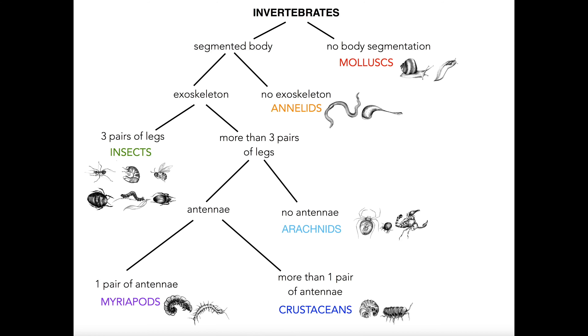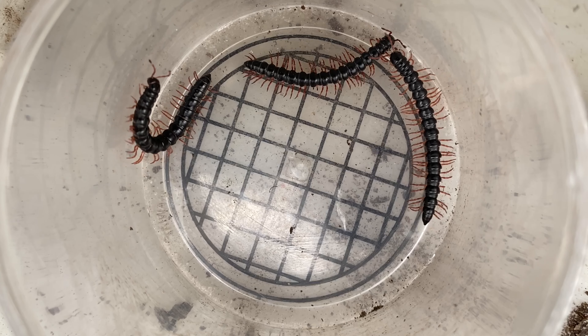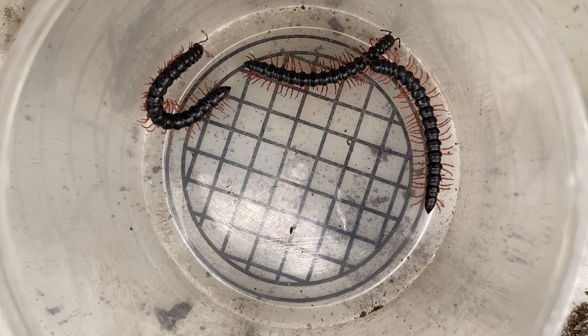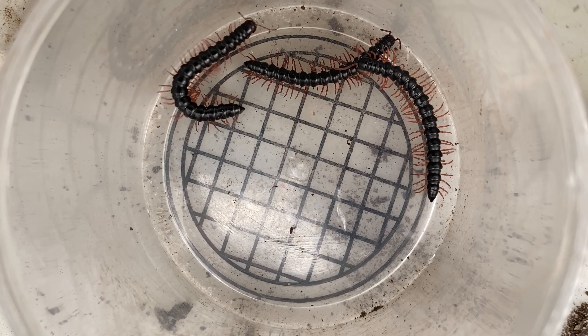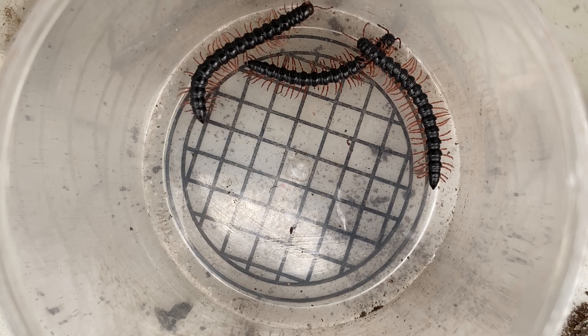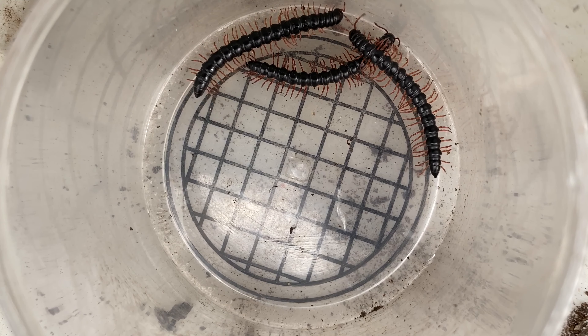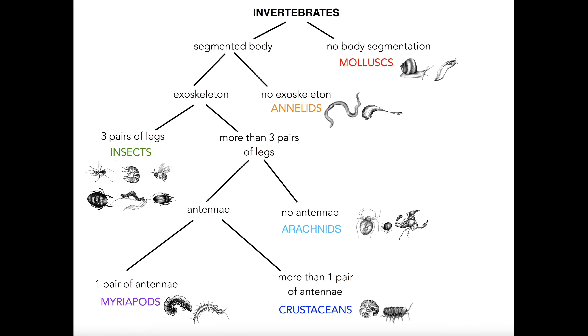The millipedes have a segmented body so they can't be a mollusk. They appear to have an exoskeleton and definitely have more than three pairs of legs, which means they can't be an insect or an annelid.